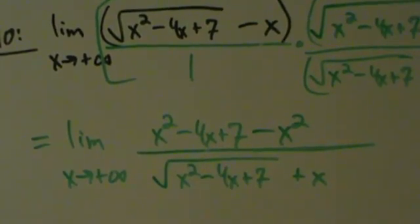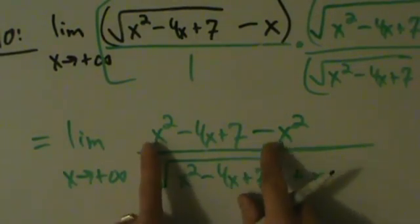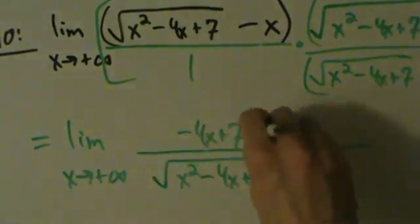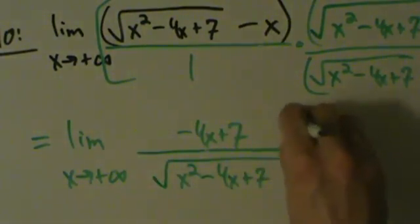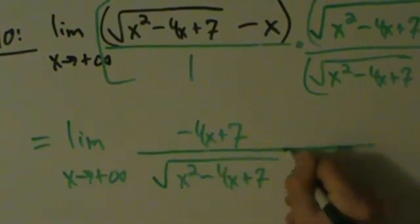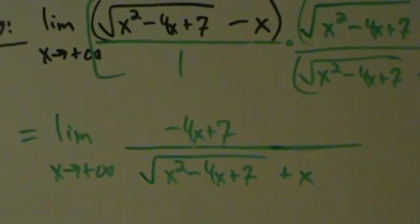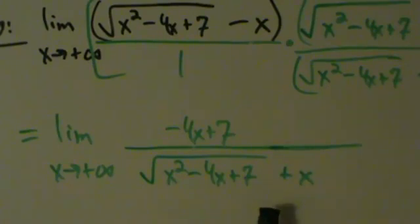On the top we have x²−4x+7−x². The x² and −x² cancel, but be careful — the minus sign stays on the 4x, so we're left with −4x+7. Now we want to figure out the highest power of x on the top and the bottom. The highest power of x on the top is x to the first, since we have −4x+7.